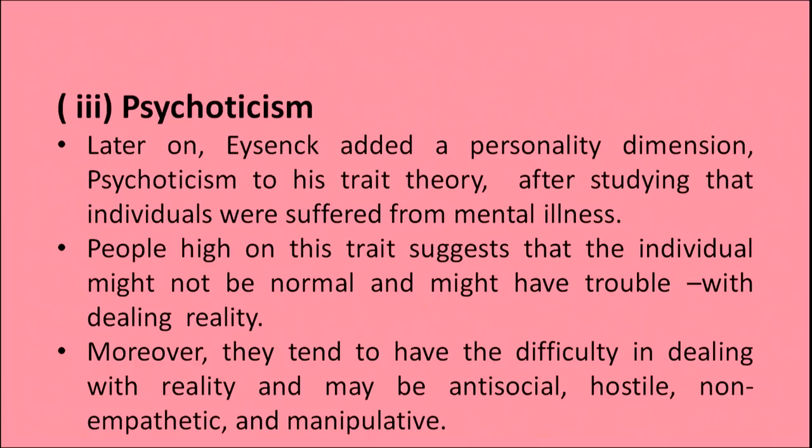The second dimension is neuroticism or emotional stability. This dimension of Eysenck's trait theory is related to moodiness versus even-temperedness. Emotional stability refers to the state of being emotionally stable or constant. Neuroticism refers to an individual's tendency to become upset or emotional, while stability refers to the tendency to remain emotionally constant. The third one is psychoticism.